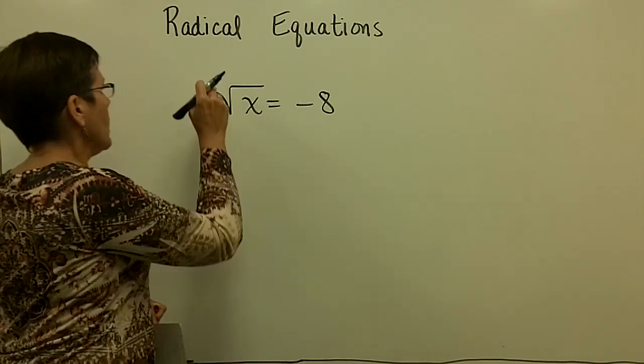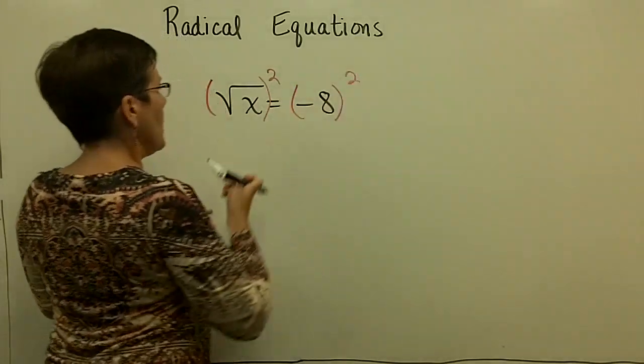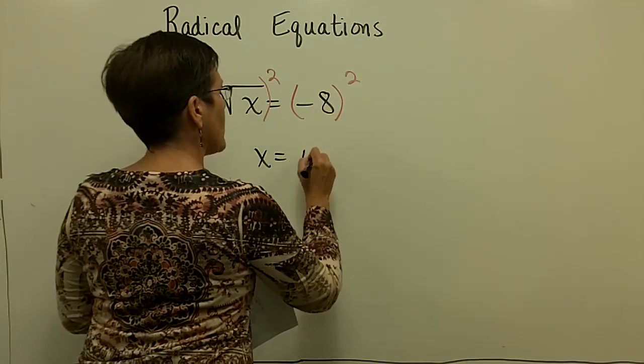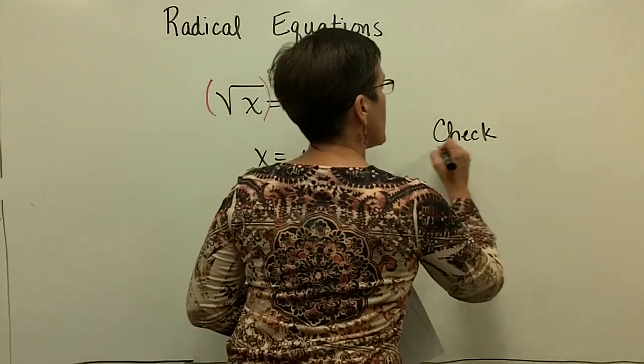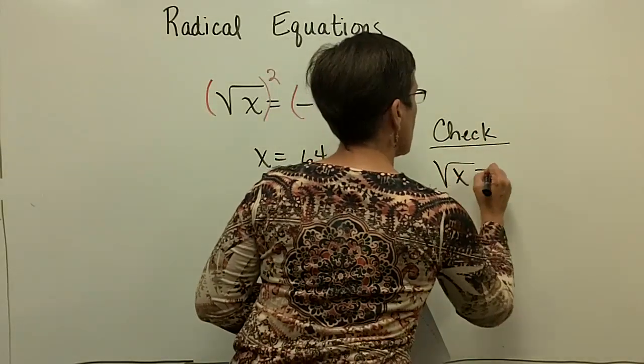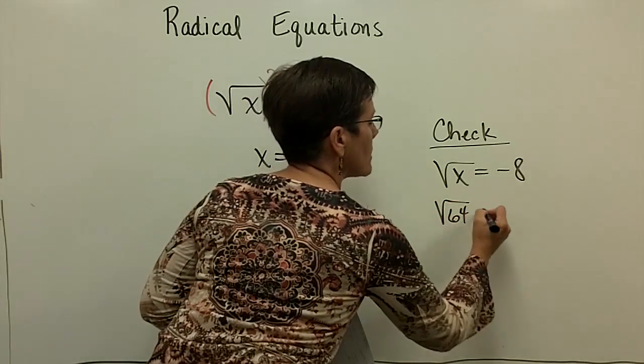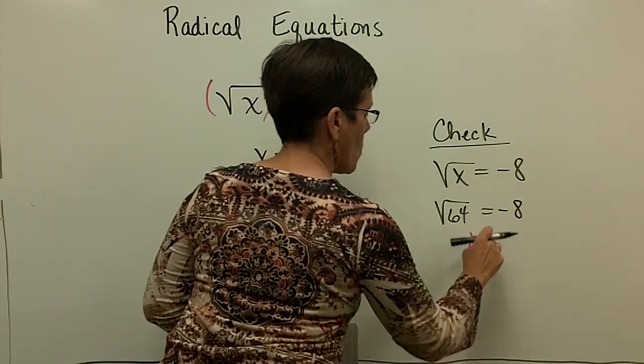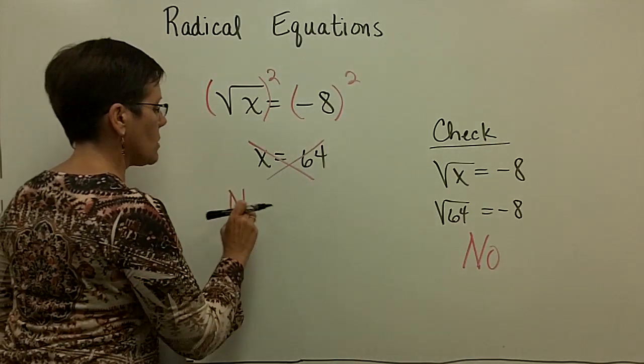But if you didn't notice it, if you went ahead and squared both sides, right here, the square root of x squared is x, and a negative 8 times a negative 8 is a positive 64. And then when you go to do your check, you would say to yourself, the original problem read the square root of x equals a negative 8. So is the square root of 64, because that's my answer, equal to a negative 8? And you'd say, no, it is not.